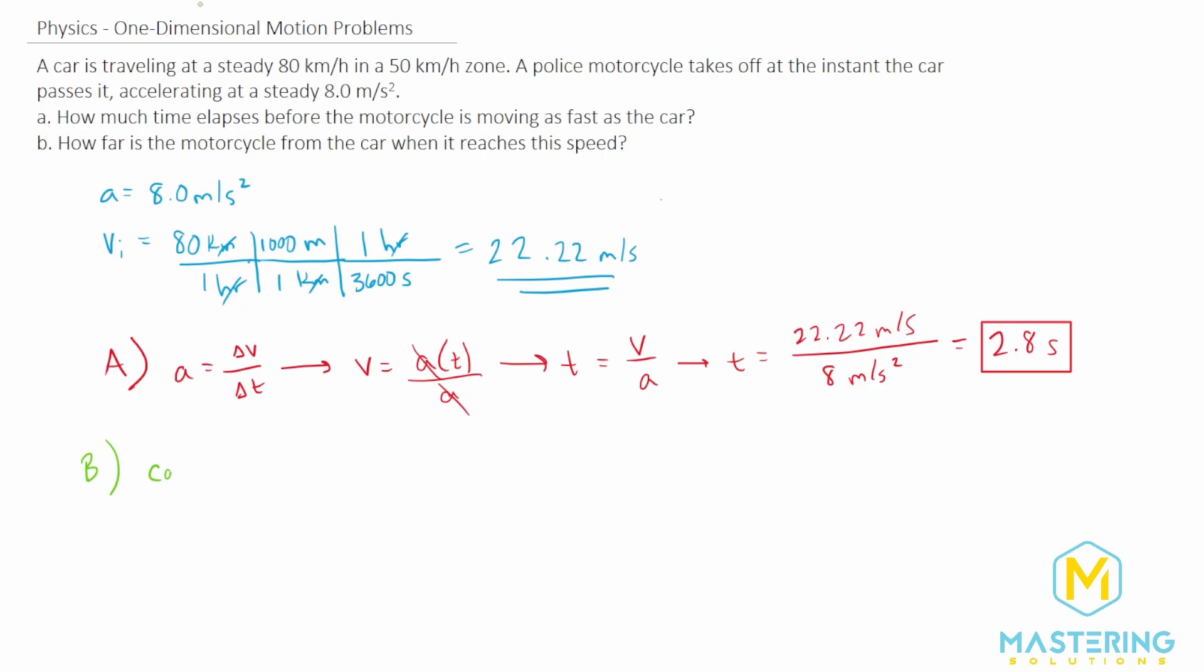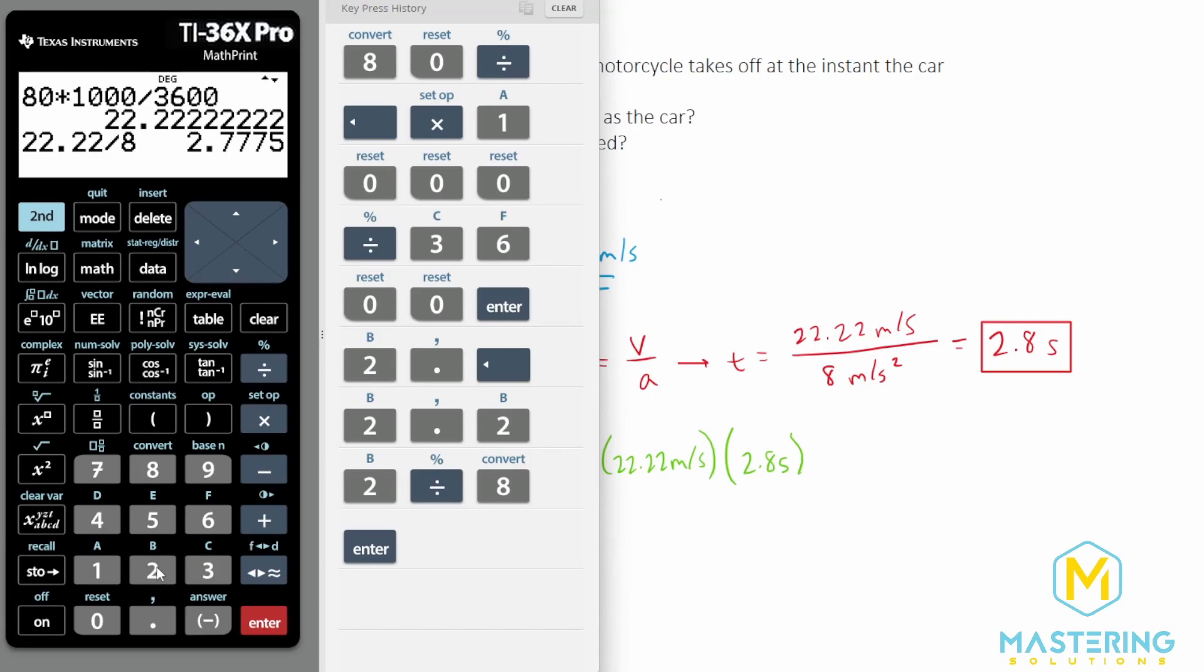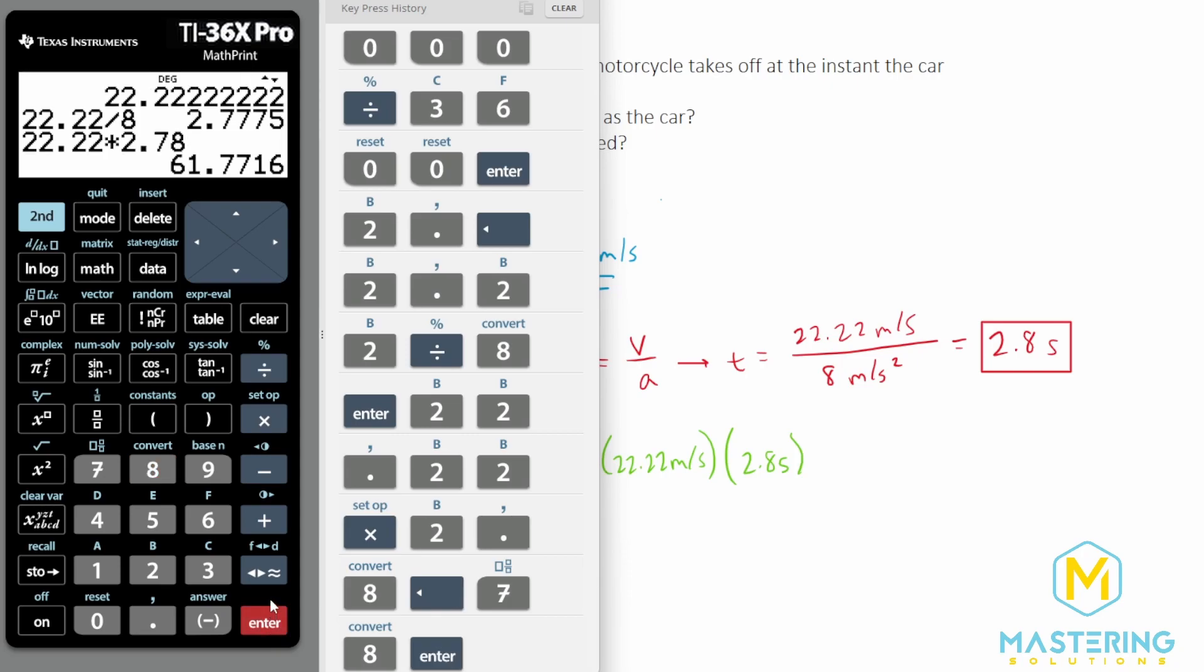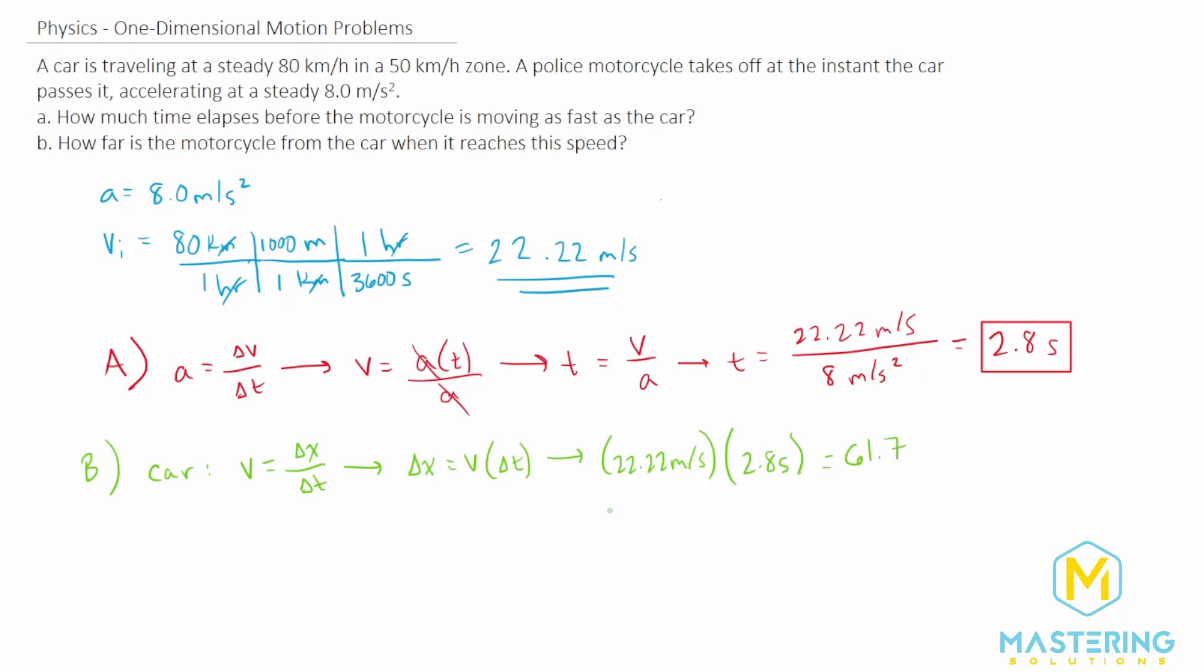Let's do the car first. That one's easier because the car is moving at a constant speed of 80 kilometers per hour. We use the velocity formula, which is the change in distance over the change in time. We want to solve for change in distance, so delta X equals velocity times time. The velocity is 22.22 meters per second, multiplied by the time we just found, 2.8 seconds. 22.22 times 2.78 gives us 61.77, so 61.7 meters is how far the car went in that time.